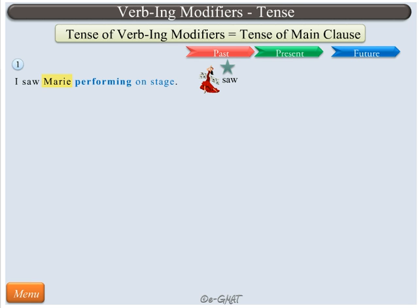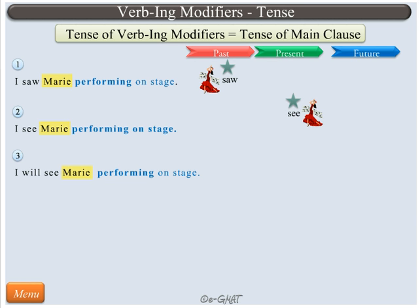Similarly, if the main clause is in present tense, as in this sentence, then it implies that I am stating a fact that I typically see Mary when she performs on the stage. In future tense, it implies that in future I will see Mary and she will be performing on the stage.